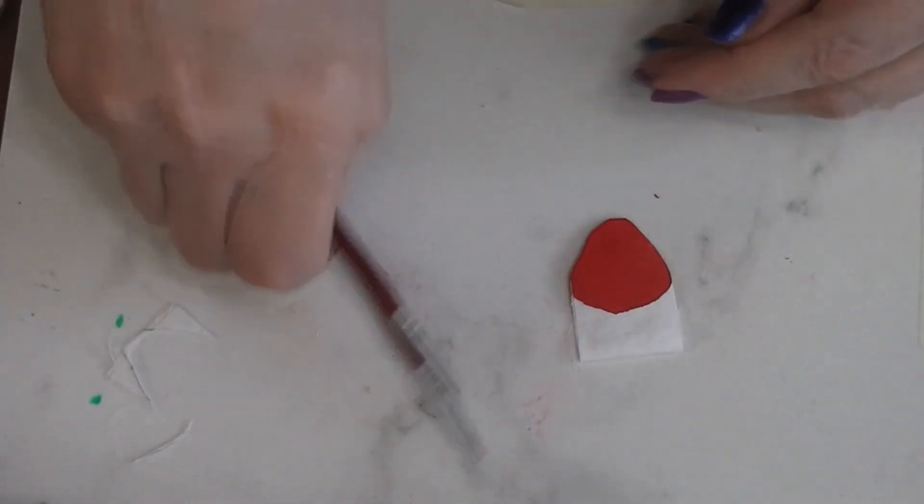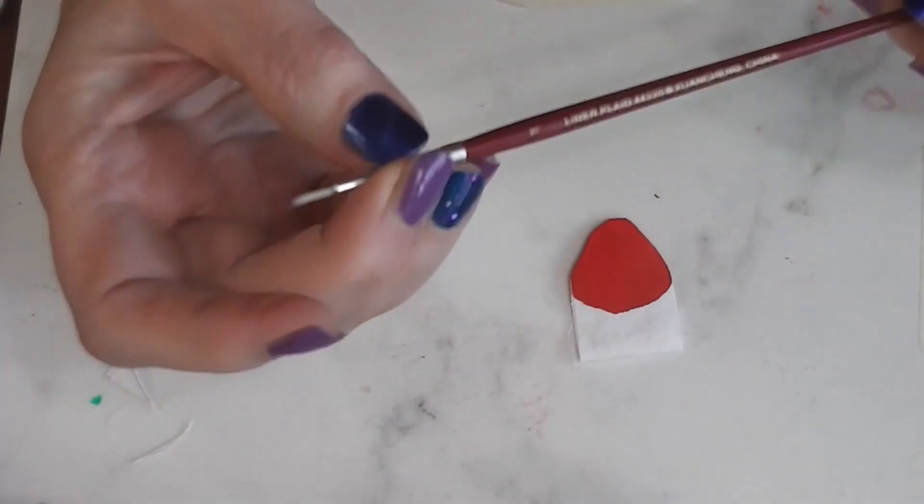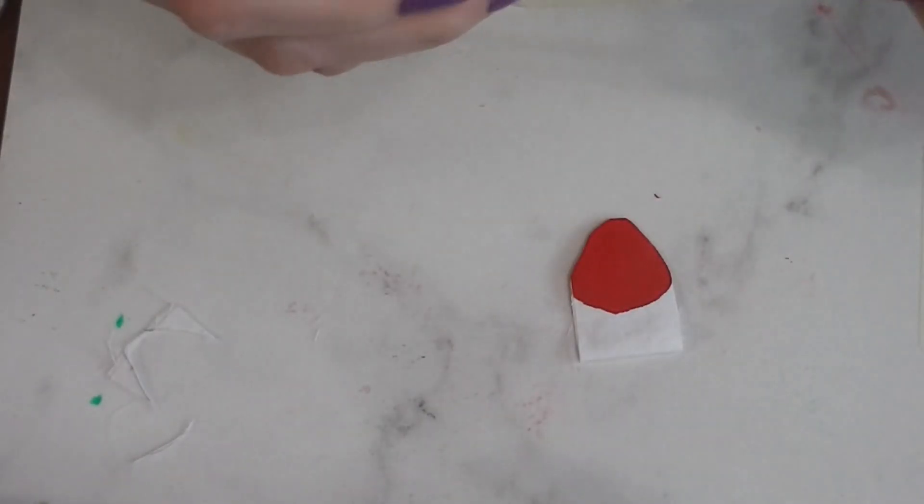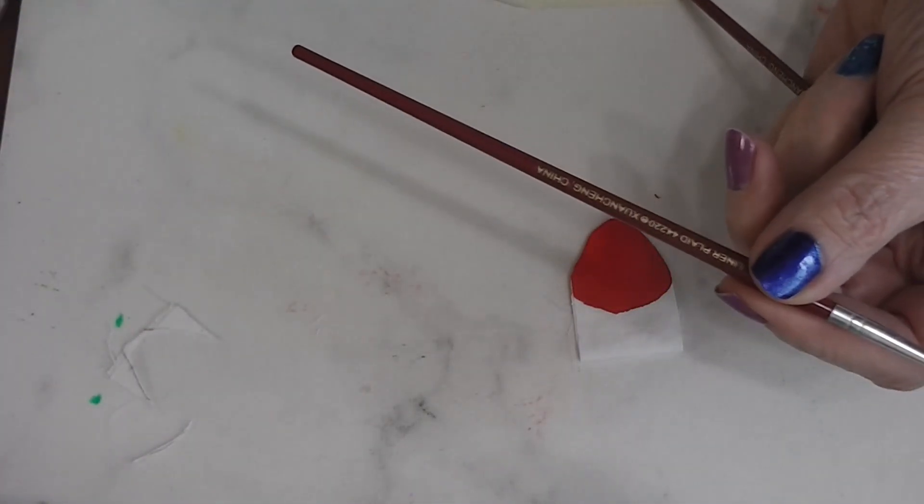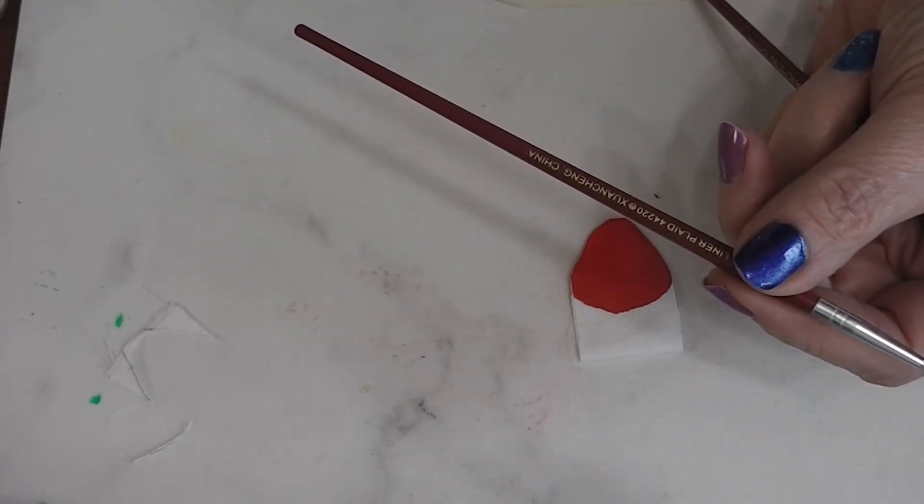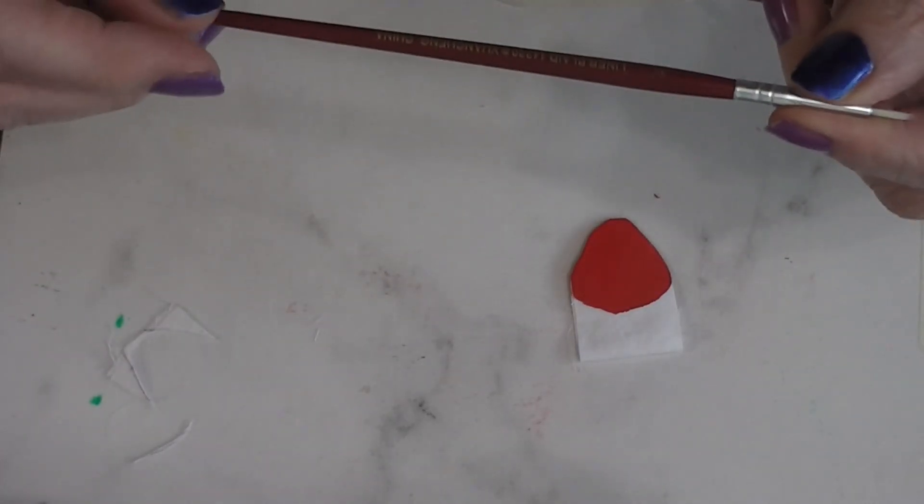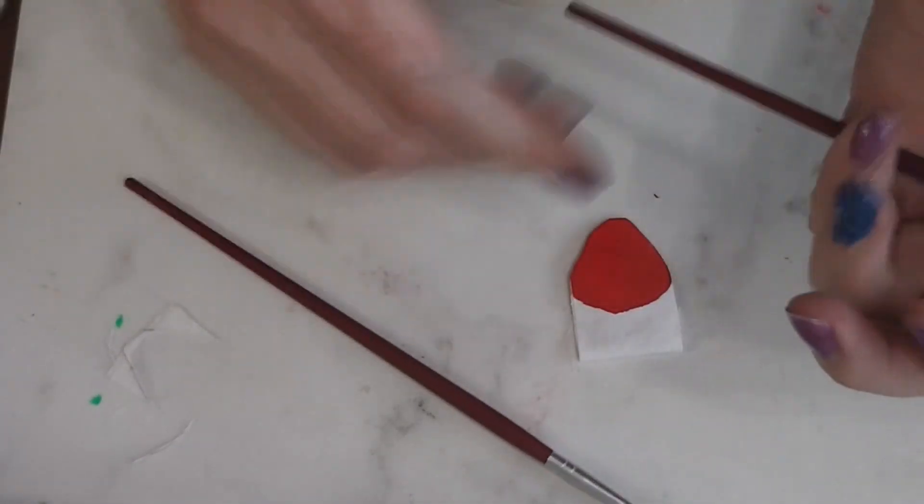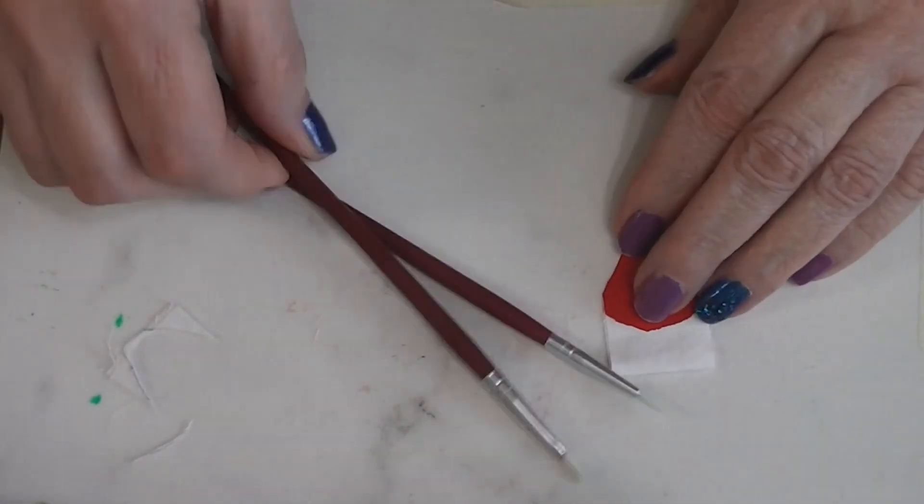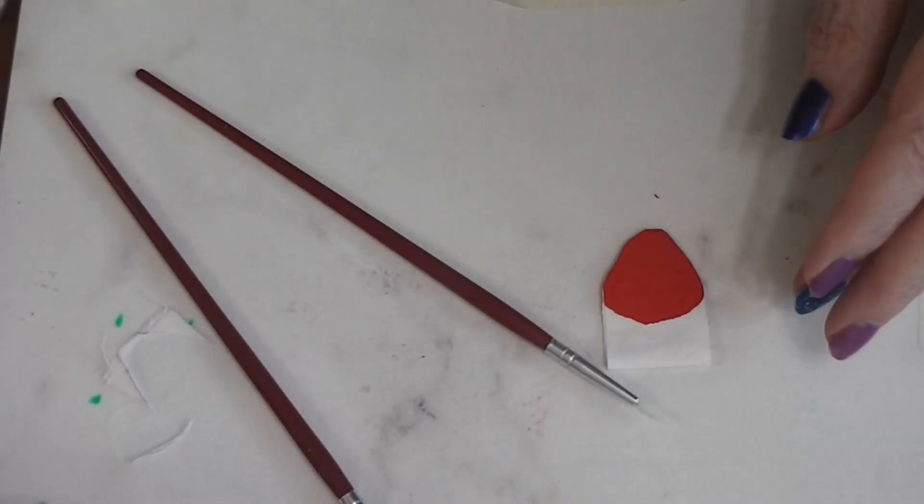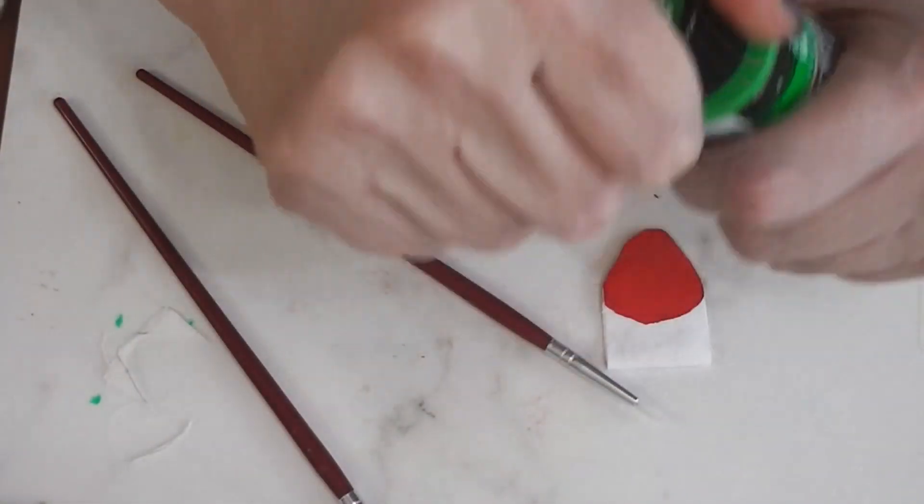I've got two small brushes, a very short one which is a liner number one, and this one is a filbert number four. We're going to use both of these. We're going to put leaves and a stem on each side. We're going to do one side at a time. I'm just using some bright green paint.